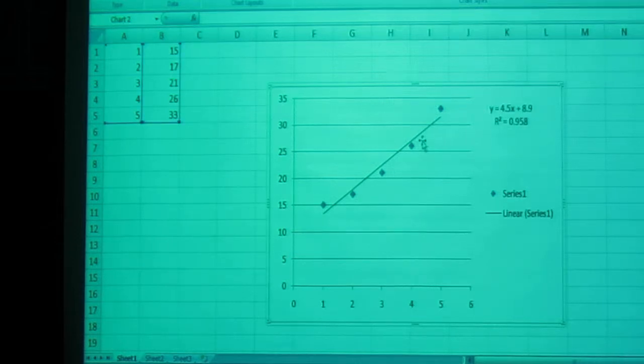Our line of best fit is visibly drawn, and the equation is Y equals 4.5X plus 8.9. The R-squared value is 0.958. We could easily get the correlation coefficient by square rooting that value.